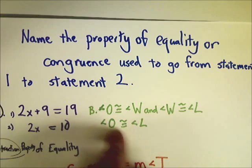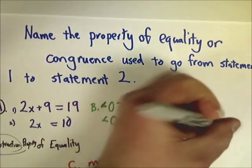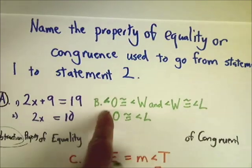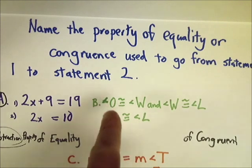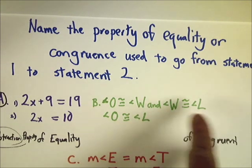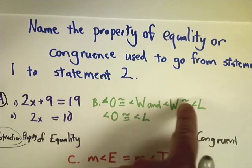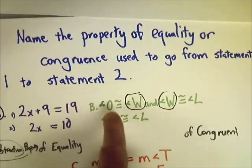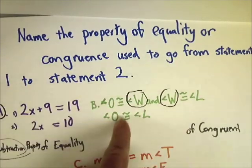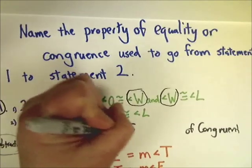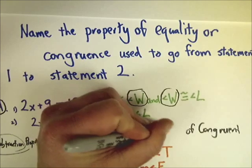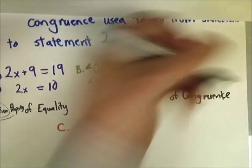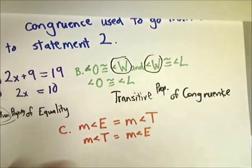In example B, the statements have congruent symbols, so it's a property of congruence. Angle O is congruent to angle W, and angle W is congruent to angle L. Angle W appears in both statements - there's a link between the two. Since one thing is congruent to two different things through that middle term, it's the transitive property of congruence.